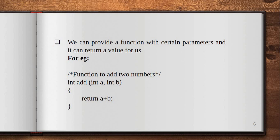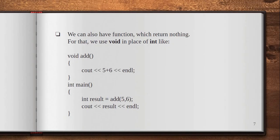We can also have functions that return nothing — for that we use void in place of int, like void add. In the previous example we wrote int add; here we have written void add, so it receives nothing as a parameter. Here we have written cout 5+6 endl, meaning we are giving the values ourselves. In int main we have int result = add(5, 6). Since add(5, 6) will be passed, we have written 5+6 in void add, and then outputted the result like cout result endl. When we run it, it gives the output 11.